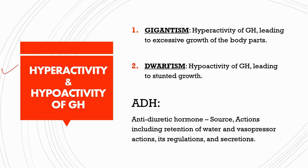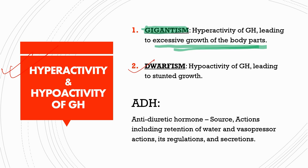Next we have the hyperactivity and hypoactivity of growth hormone. Hyperactivity simply means more secretion, which leads to gigantism where excessive growth of body parts takes place. Similarly, in case of hyposecretion, dwarfism takes place. Short notes on gigantism and dwarfism might be asked in your professional exams.